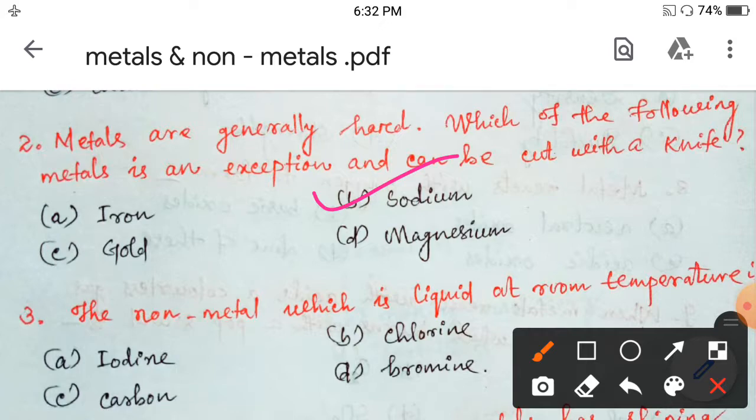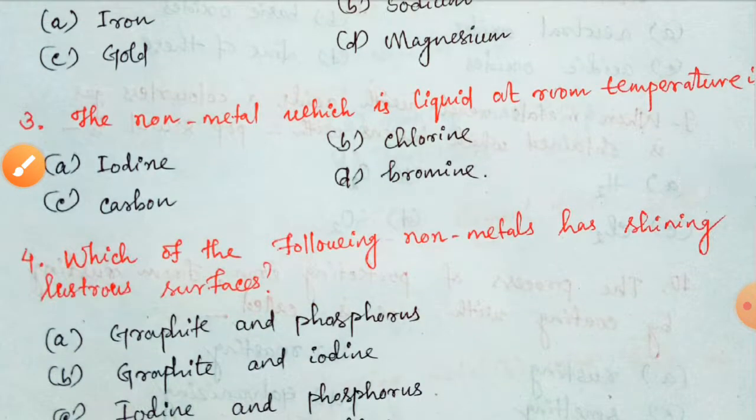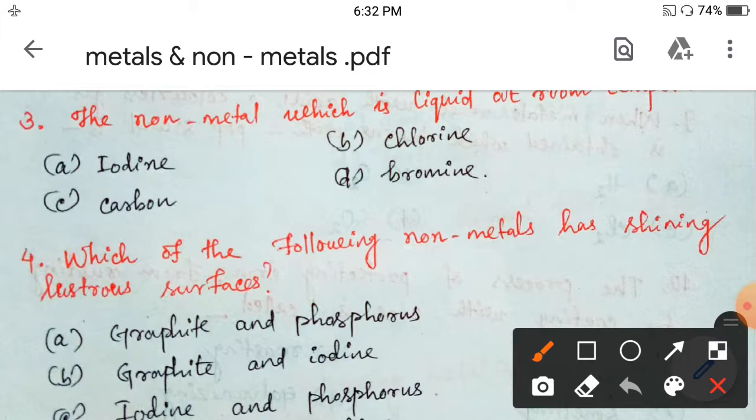Next, Question Number 3. The non-metal which is liquid at room temperature is? Iodine, Chlorine, Carbon, Bromine. Generally, non-metals are available in the form of solids and gases. But there is only one non-metal which is liquid at room temperature, and it is your Bromine. Option D. Non-metal that is liquid is Bromine, and metal that is liquid is Mercury.